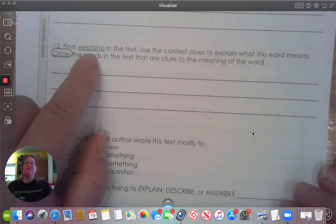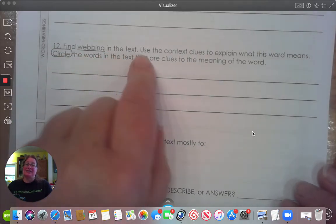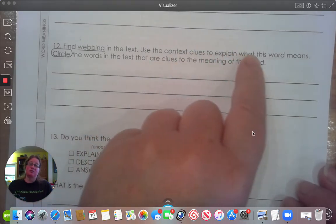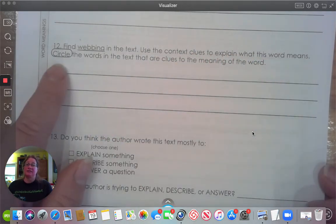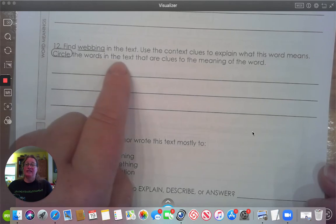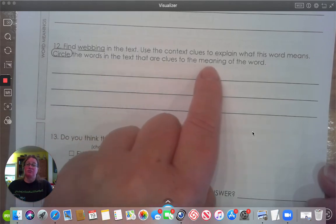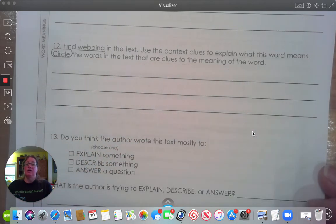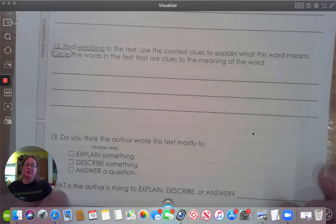Number 12. Find webbing in the text. Use the context clues to explain what this word means. Circle the words in the text that are clues to the meaning of the word. Again, you will follow the same directions as we did for number 11. And if you still need more assistance, please go back and re-watch Monday's video.